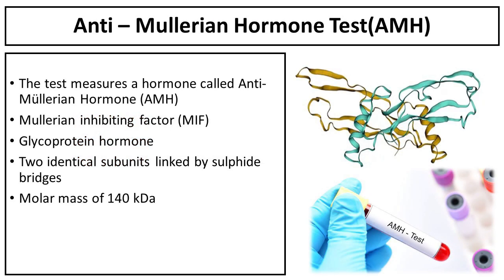The anti-Müllerian hormone (AMH) test measures a hormone called anti-Müllerian hormone level in human serum, also known as Müllerian inhibiting factor. It is a glycoprotein hormone which consists of two identical subunits linked by sulfide bridges, with a molar mass of 140 kilodaltons.